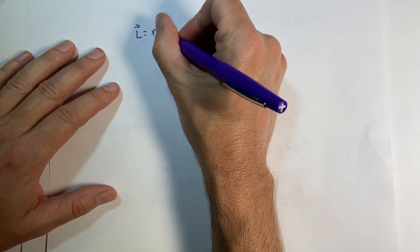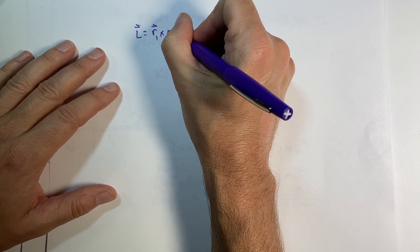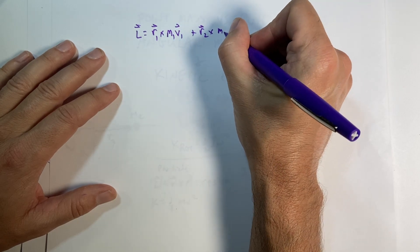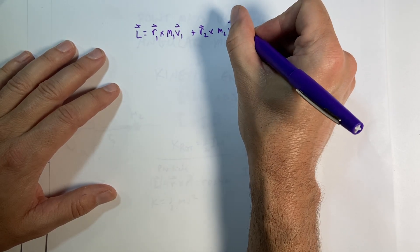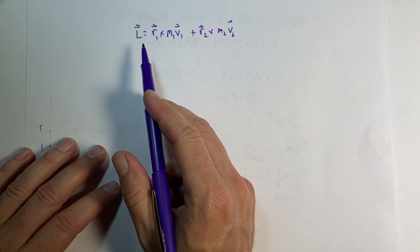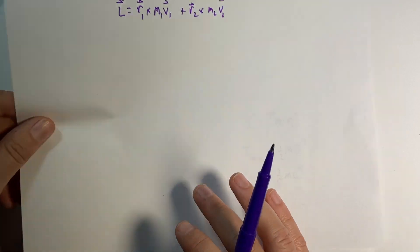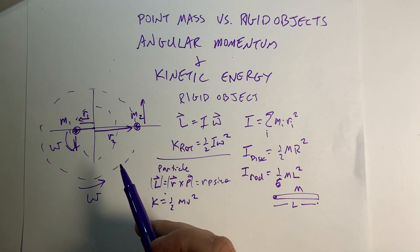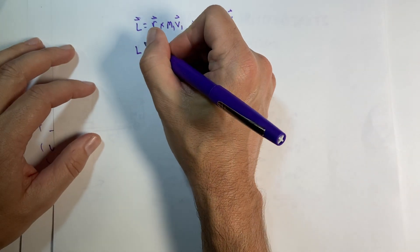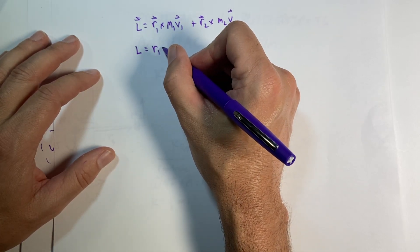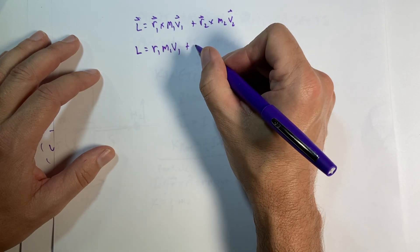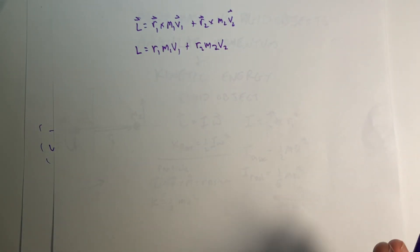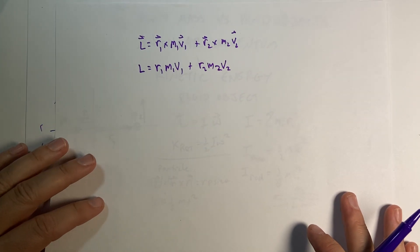So let's do the angular momentum first. So L equals r1 cross m1 v1 plus r2 cross m2 v2. So these are cross products, but I can find the magnitude of this because in this case the momentum of these two are going to be perpendicular to r. So this is going to be the equivalent of L, the magnitude is just going to be r1 m1 v1 plus r2 m2 v2. I know you're going to have to trust me on that one a little bit, okay, and I apologize for that, but that's just the truth.